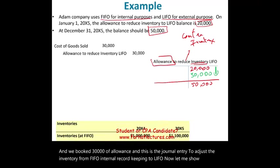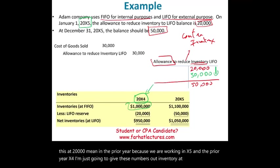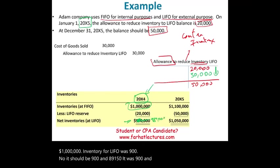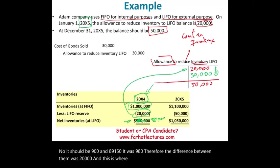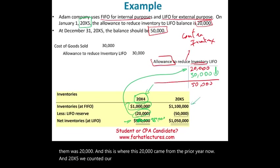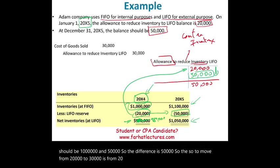Let me show you what that $20,000 means. In the prior year X4, inventory at FIFO was $1,000,000 and inventory at LIFO was $980,000. Therefore, the difference between them was $20,000 — and this is where that $20,000 balance came from. Now in 20X5, we counted our inventory: FIFO was $1,100,000 and LIFO should be $1,050,000. So the difference is $50,000. To move from $20,000 to $50,000, the difference is $30,000, and this is where the $30,000 adjustment came from.